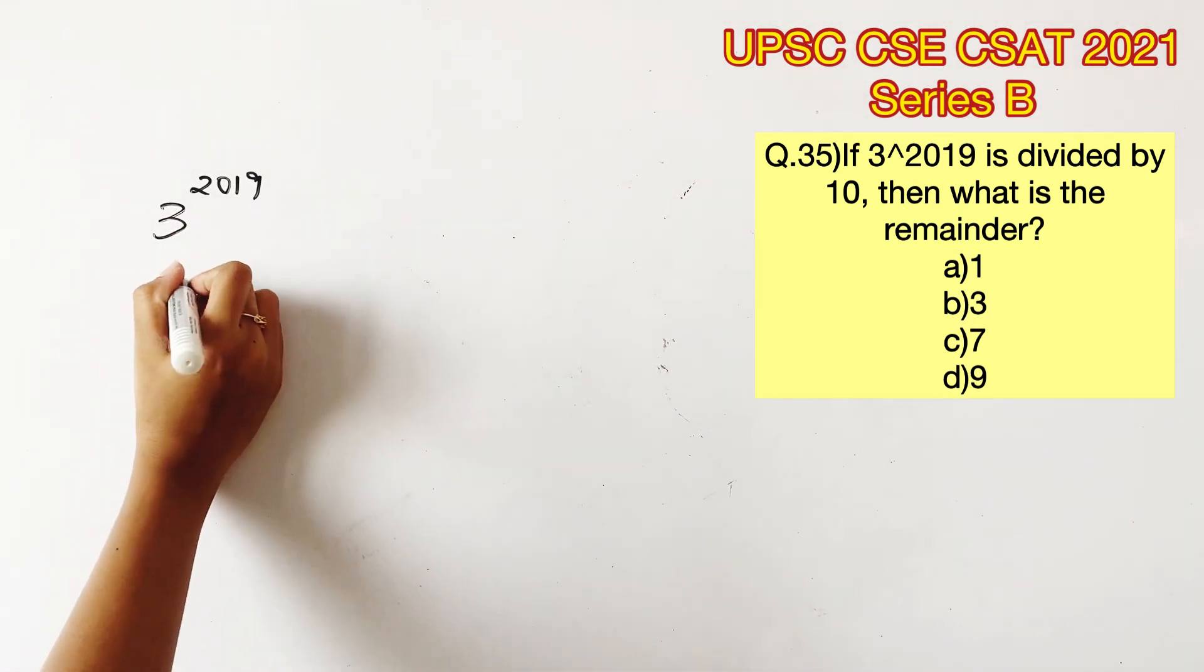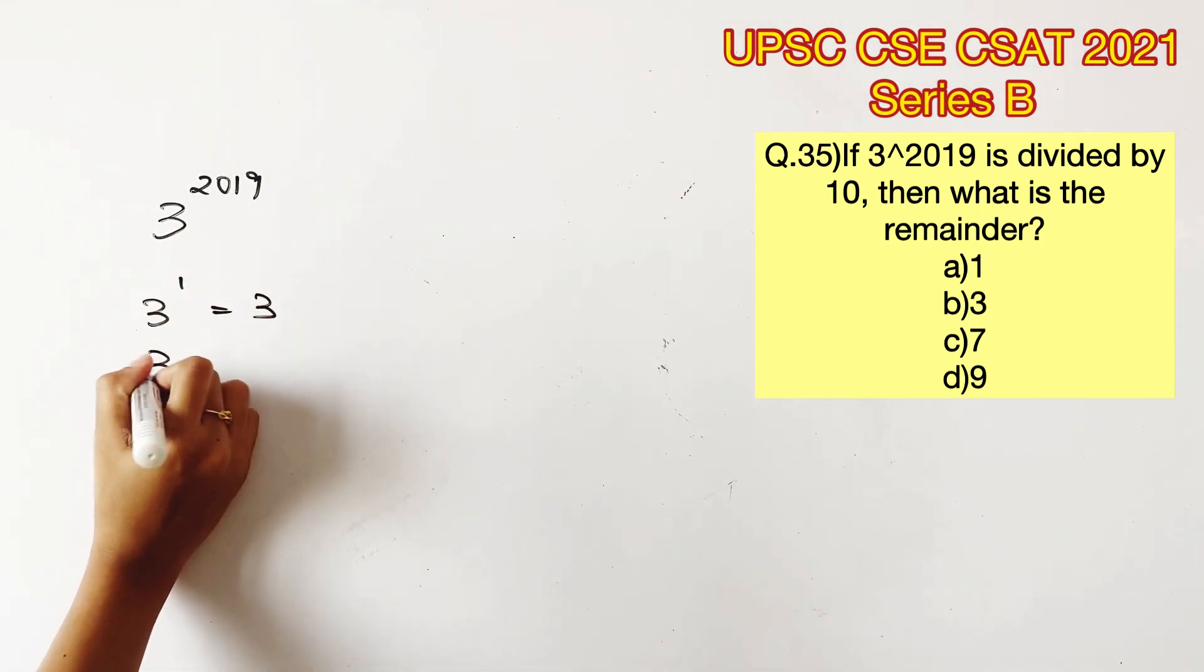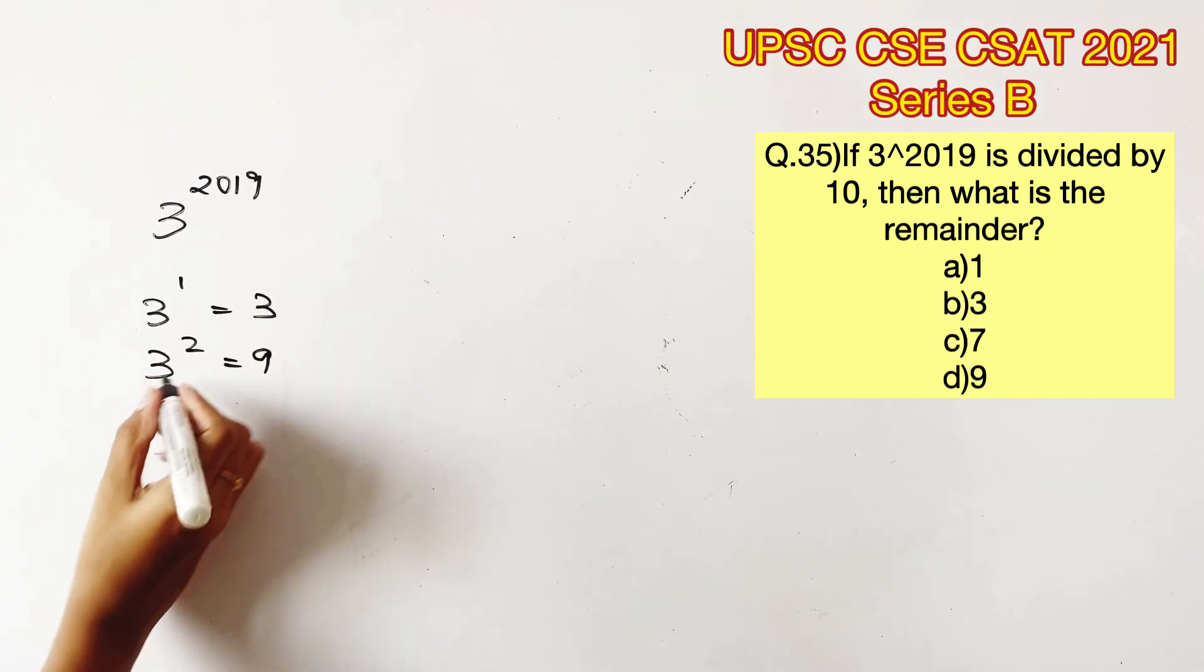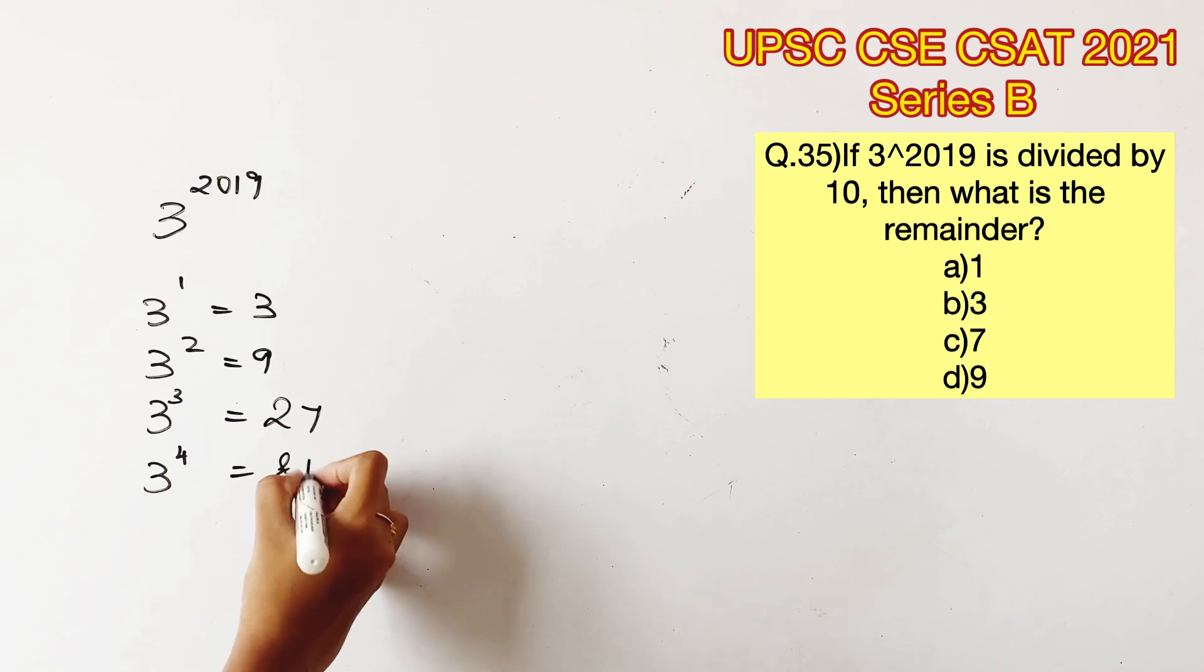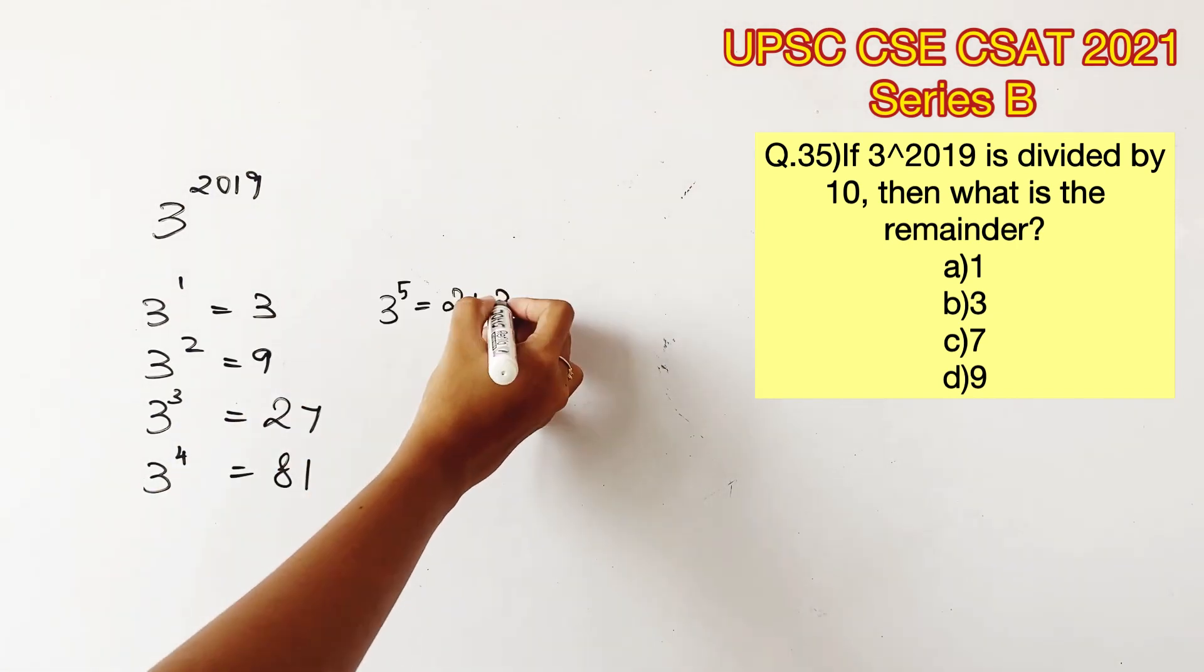Now let's understand the powers of 3. 3 power 1 will give us 3. 3 square will give us 9. 3 cube will give us 27. And 3 power 4 will give us 81. Again, 3 power 5 will give us 243.